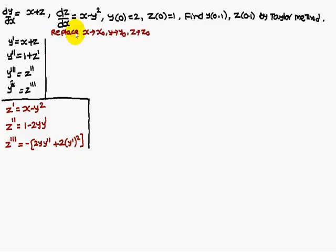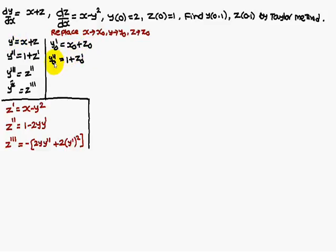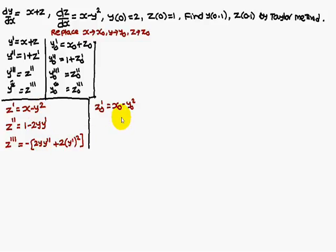Next, replace x with x naught, y with y naught, and z with z naught. So, y naught dash is x naught plus z naught. Similarly, y naught double dash is 1 plus z naught dash, and so on. In the z equation also, replace x with x naught, y with y naught, z with z naught.